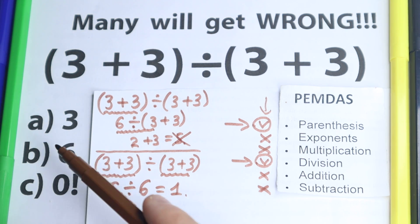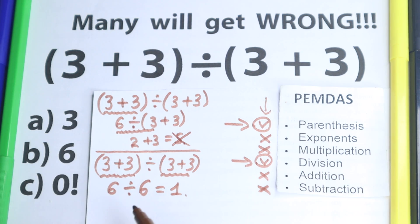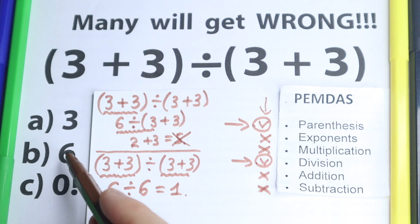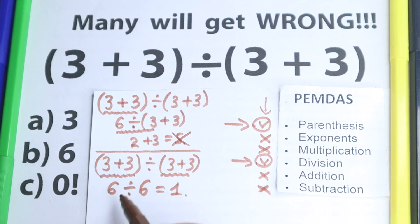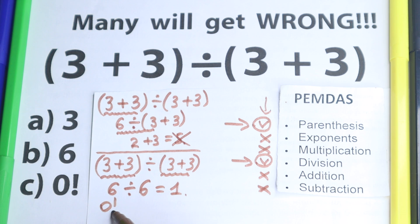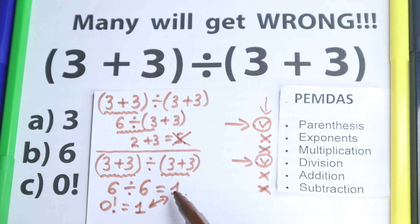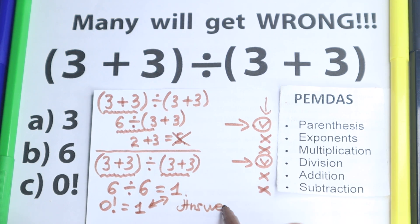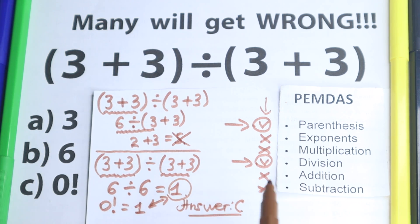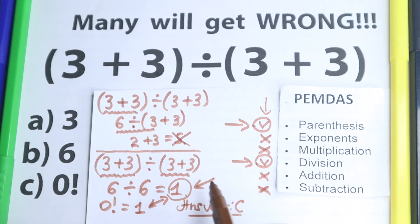Our last hope is option c — 0 factorial. What is 0 factorial? This is a special case from school: 0 factorial equals 1. So our answer of 1 is the same as 0 factorial, and the correct letter for this test is option C. The true mathematical answer is 1, but since this is a multiple-choice test, we choose option C because 0! = 1.